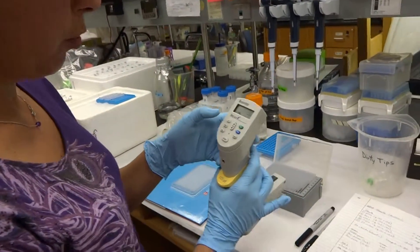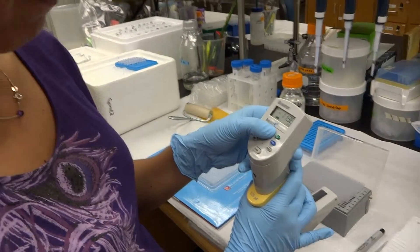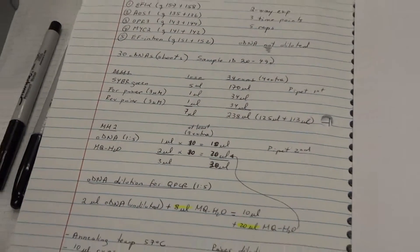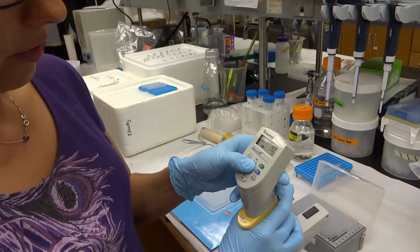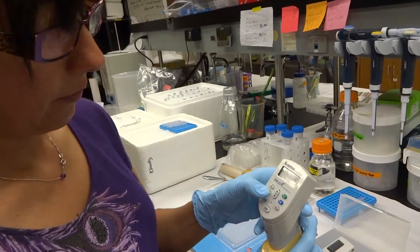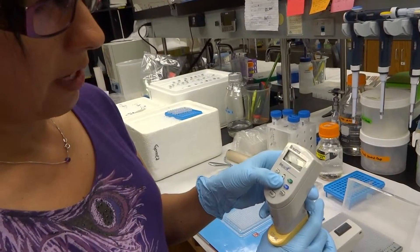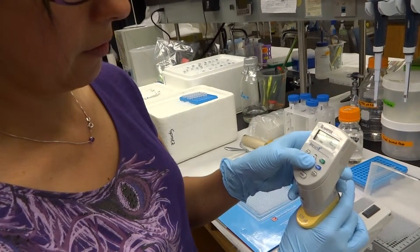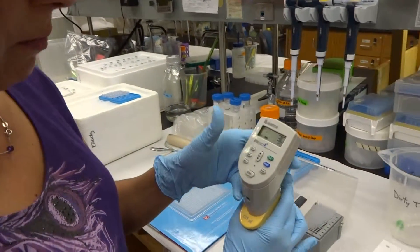So before that, we have to program this thing again. We are going to pipette. Now the volume is three. I'm going to take three. We are going to dispense also three. And then we are going to mix, and the volume is going to be ten because we have seven plus six plus three, ten. Double beep is ready to go.